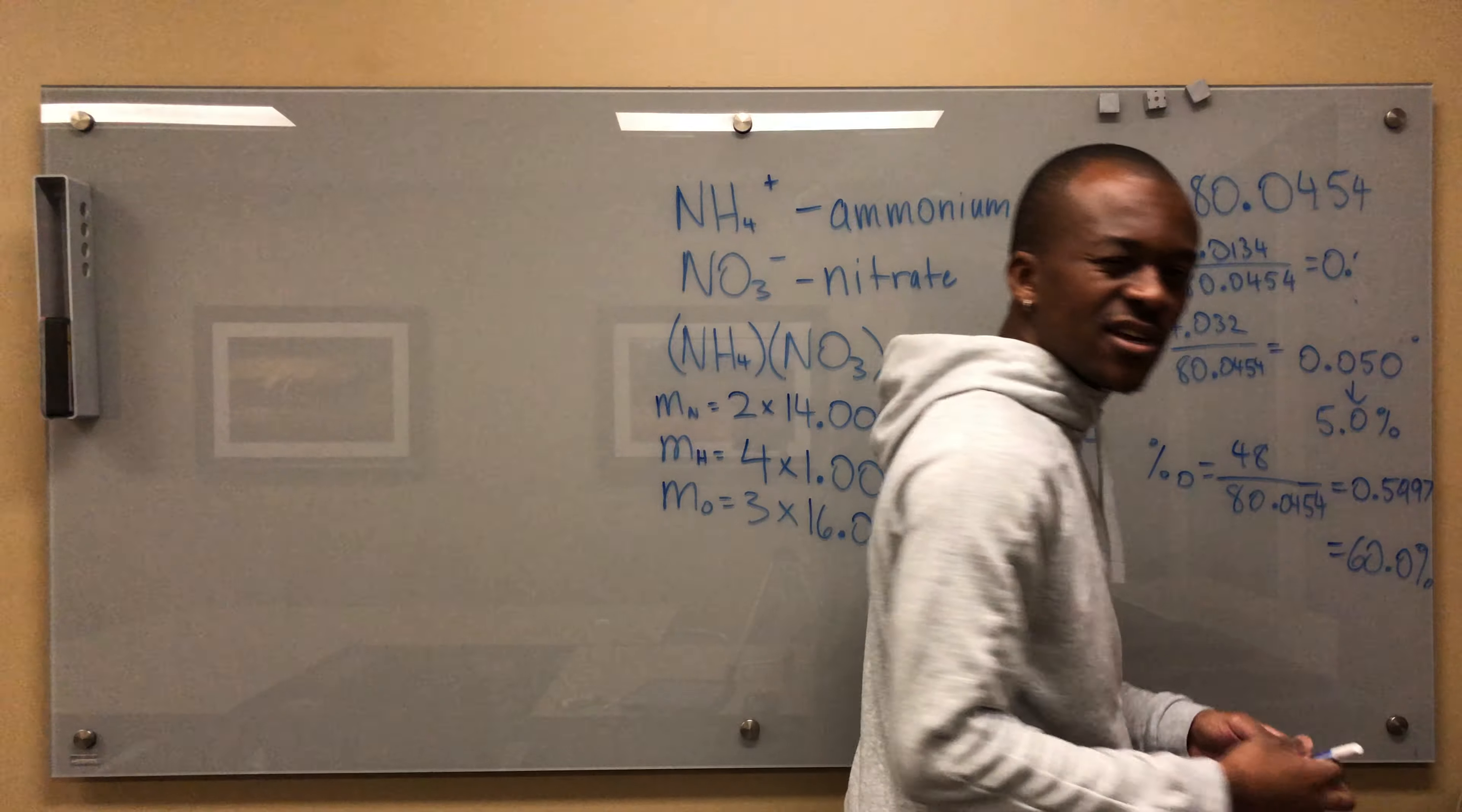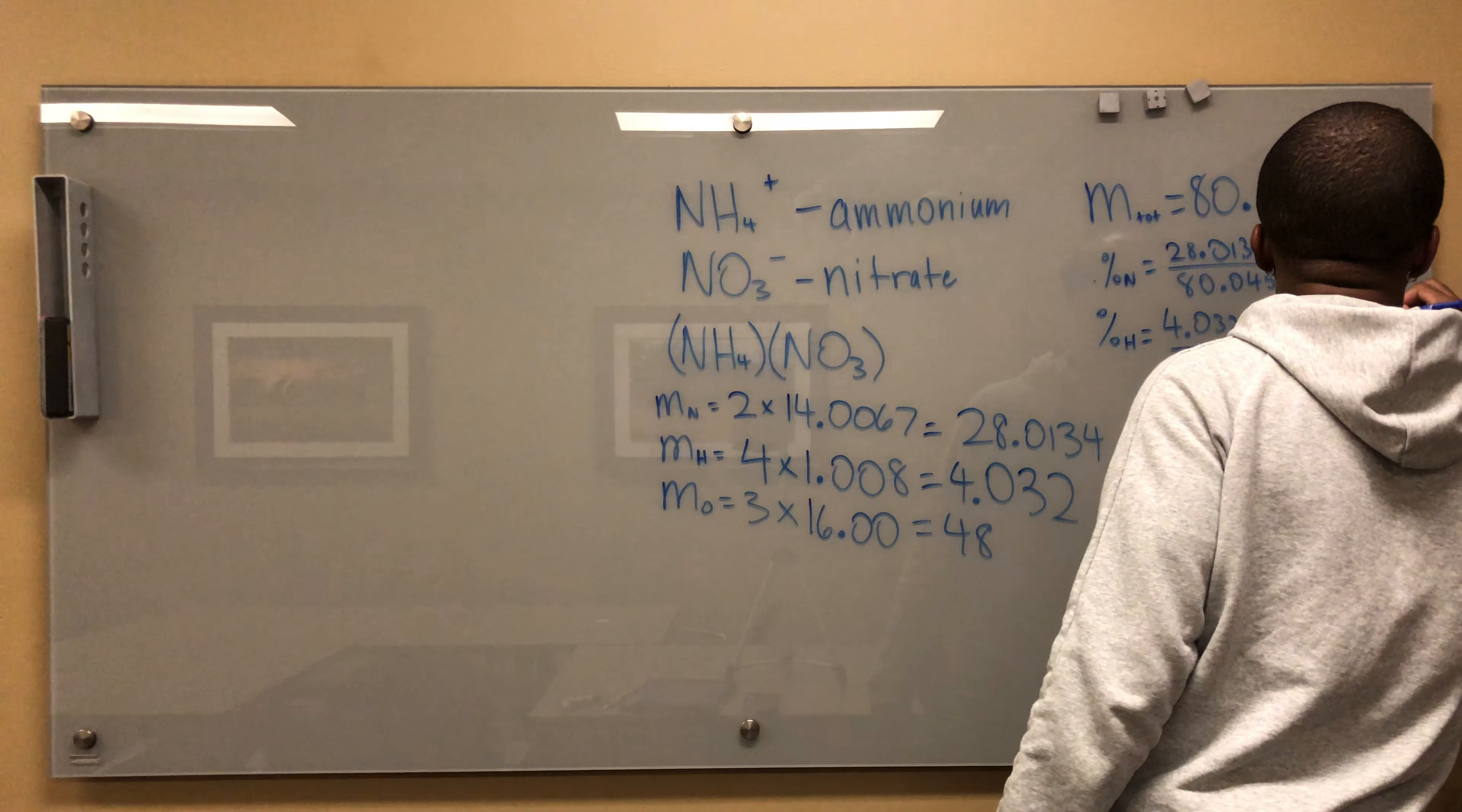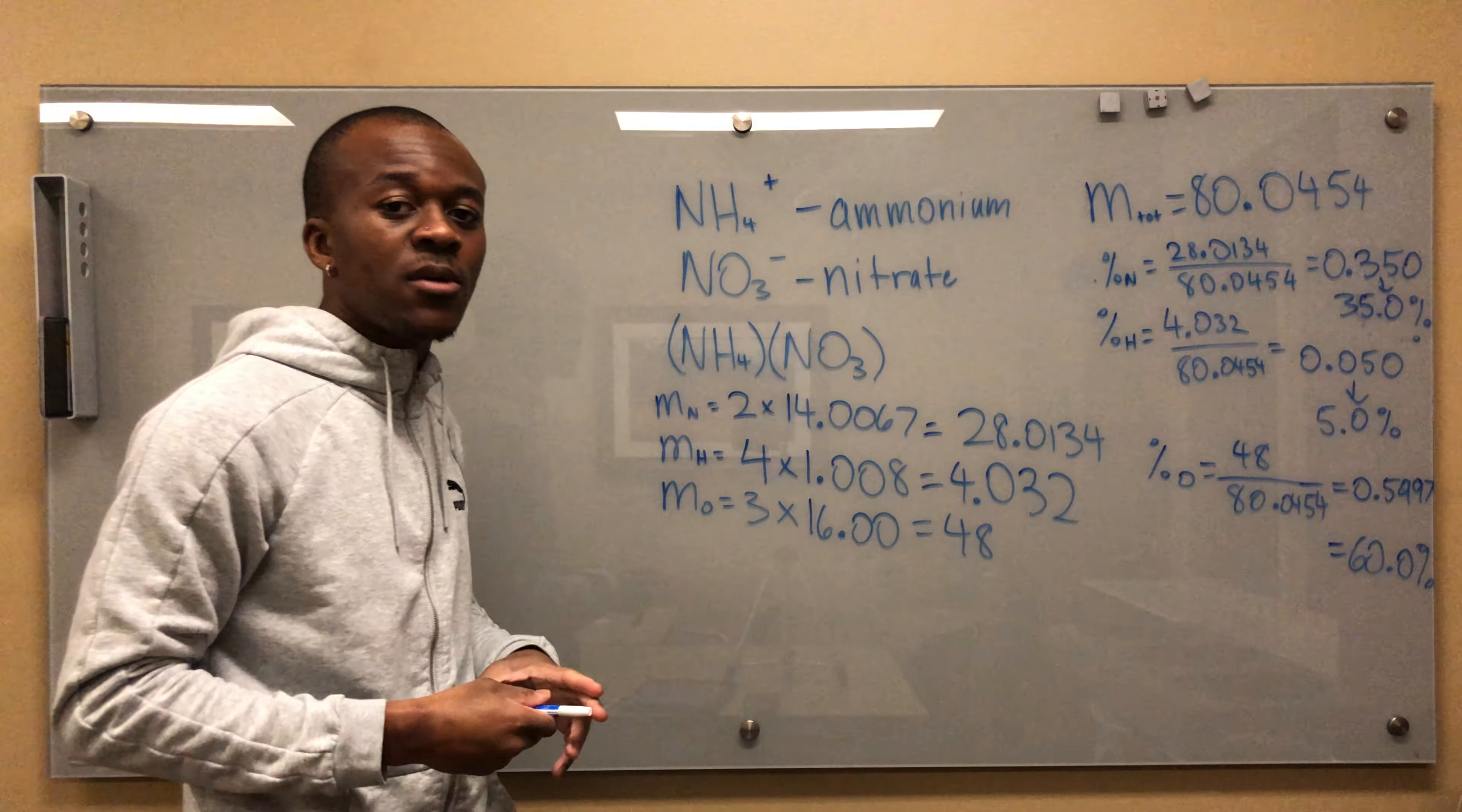That's actually 0.35 - I don't know why it showed 0.26. That's a way to catch yourself - if it doesn't add up to 100, something's wrong, because mass percentage means 100 percent total. So I'm going to write 0.35, which is 35 percent. So 35 percent of this compound comes from nitrogen, 5 percent from hydrogen, and 60 percent from oxygen.